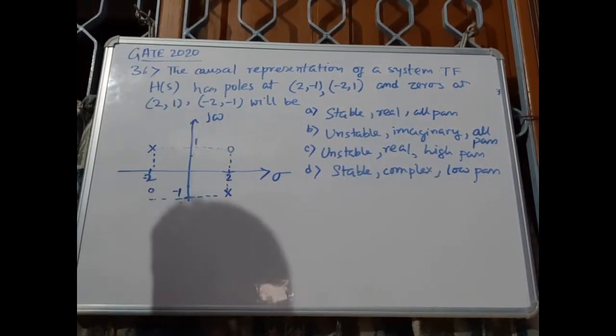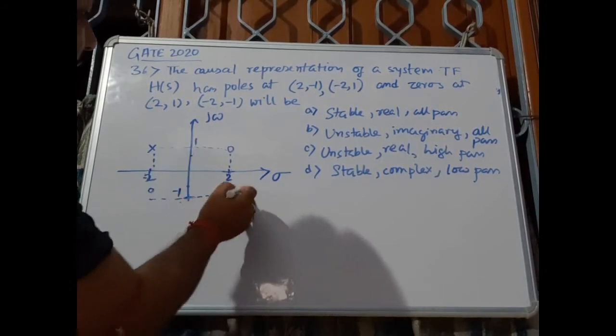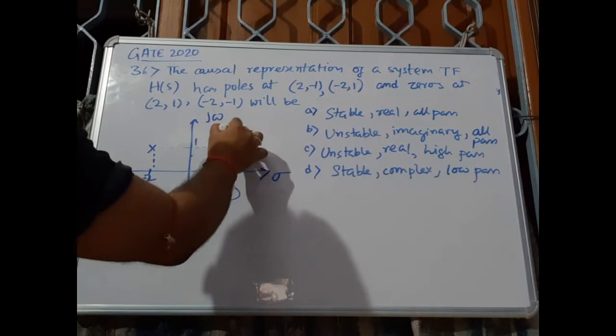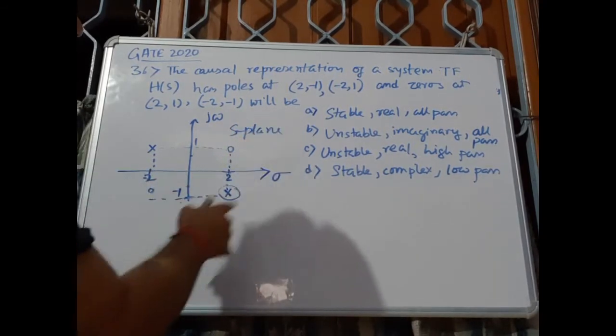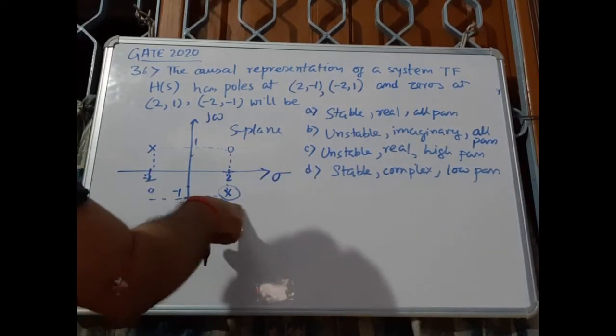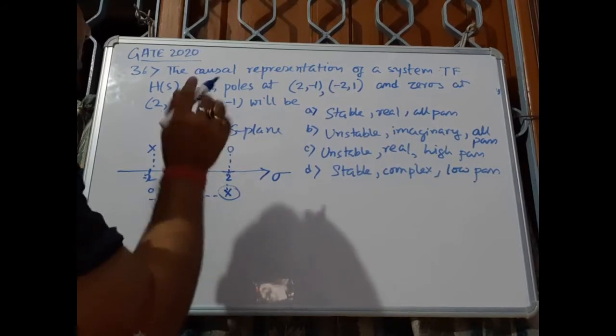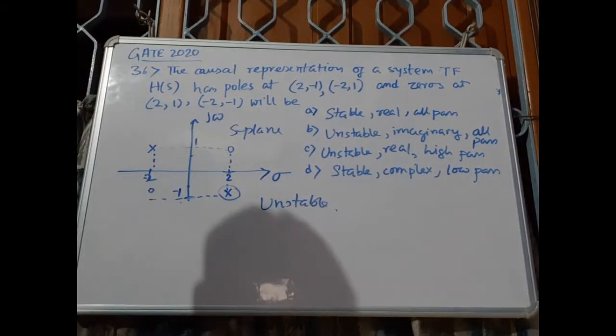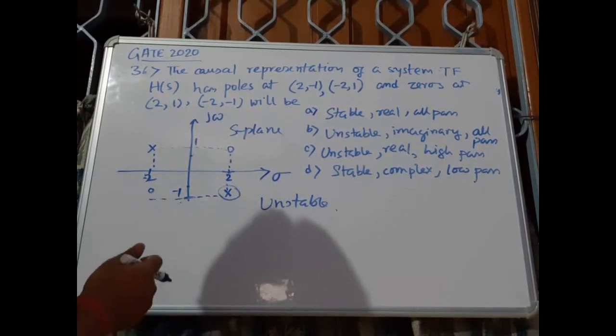For stability, one of the poles is in the right half of the s-plane. This is the s-plane, and one of the poles is in the right half. So this system must be unstable.